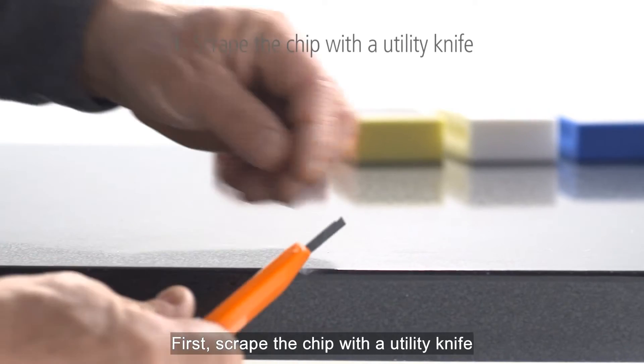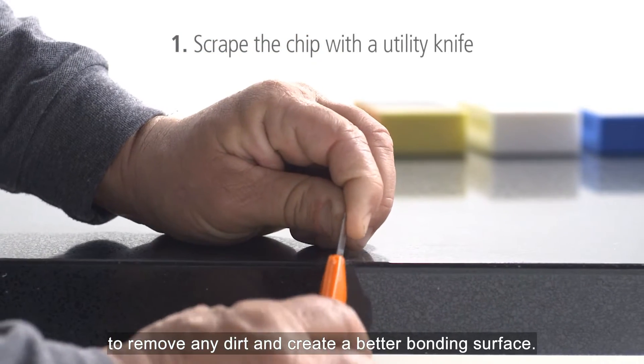First, scrape the chip with a utility knife to remove any dirt and create a better bonding surface.